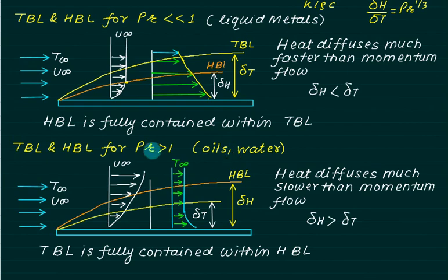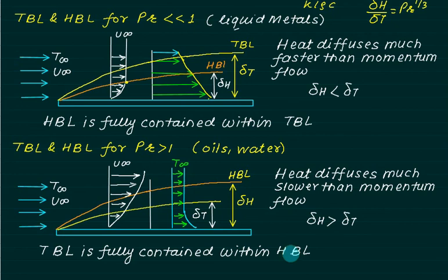For fluids like oil and water, the Prandtl number is greater than one. When Pr is greater than one, delta_h is greater than delta_t, meaning the hydrodynamic boundary layer is outside and the thermal boundary layer is fully contained within the hydrodynamic boundary layer. We conclude: when Pr is greater than one, heat diffuses much slower than momentum; when Pr is less than one, heat diffuses much faster than momentum, which is desirable in nuclear power plants for quick heat transfer.